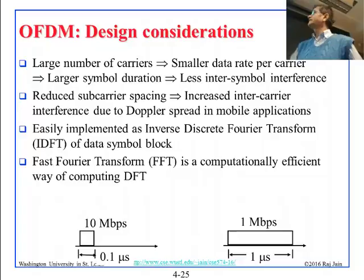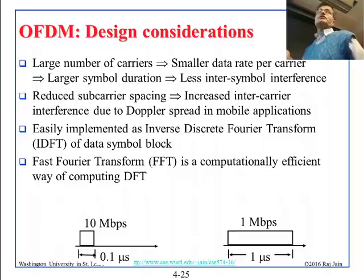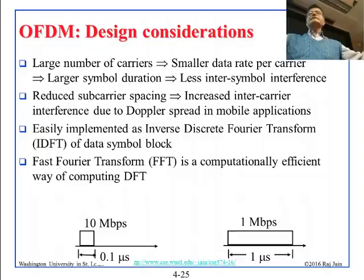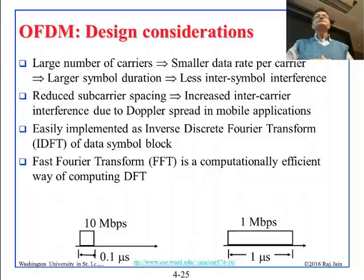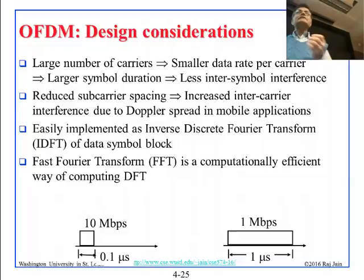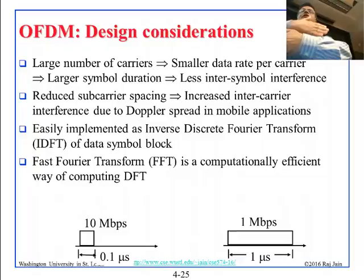If a bit shifts in time due to multipath or any other reason, the larger bits are affected less than tiny bits. Reduced subcarrier spacing brings two key benefits. First, less inter-symbol interference — when bits run into each other and start affecting each other, that is inter-symbol interference. Second, less inter-carrier interference — if a carrier puts a lot of power into the center area of a neighboring carrier, the neighbor is affected.